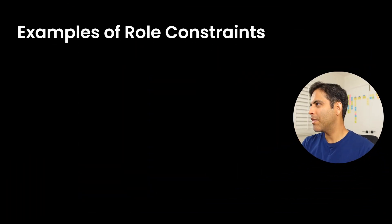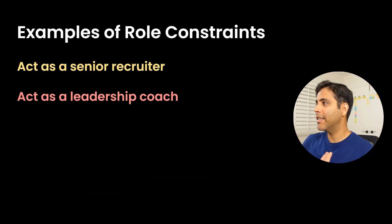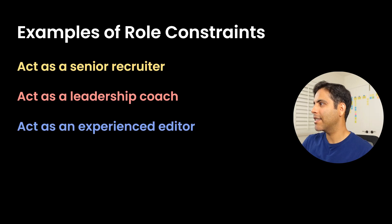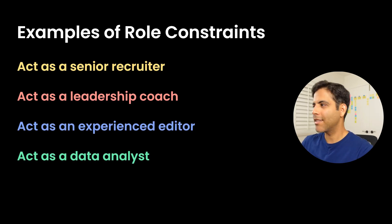Level 3. We start by adding a role — the perspective or identity that you want AI to take on, so it can give you answers from that particular viewpoint. Here are some examples: act as a senior recruiter, act as a leadership coach, act as an experienced editor, act as a data analyst. When answering your questions, AI will take on that specific expertise or viewpoint.